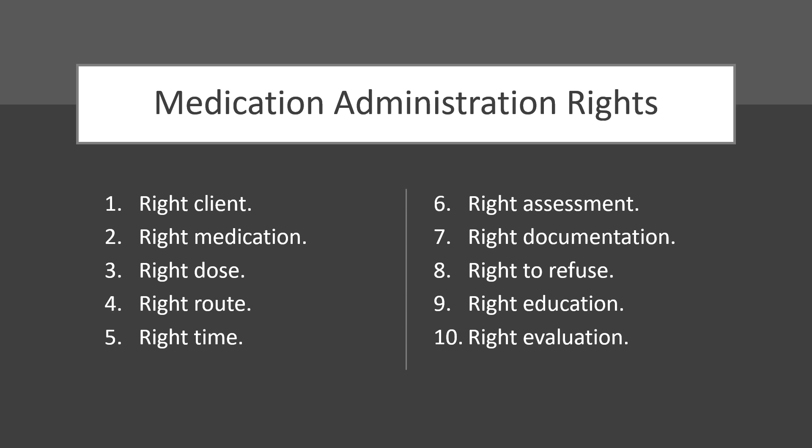PRN medications are as-needed medications, often required for specific symptoms — for example, a pain medication may be ordered based on the need for relief of pain. Time-critical medications are administered either 30 minutes before or 30 minutes after the scheduled administration time, and may cause harm or result in a substandard pharmacological effect if administered at any other time.